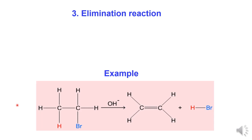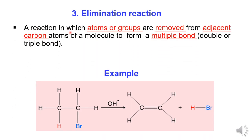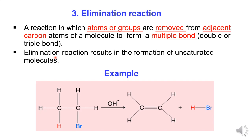3. Elimination reaction is a reaction in which atoms or groups are removed from adjacent carbon atoms of a molecule to form a multiple bond consisting of a double or triple bond, resulting in the formation of an unsaturated molecule. Example: From a haloalkane compound, H and Br are removed from adjacent carbon atoms to form a product consisting of a carbon-carbon double bond.